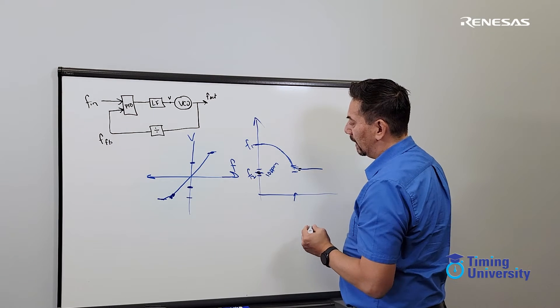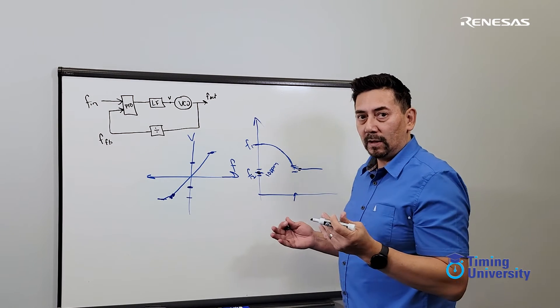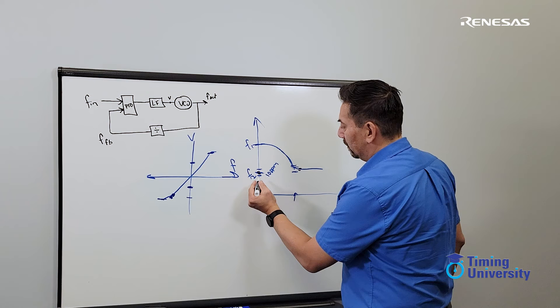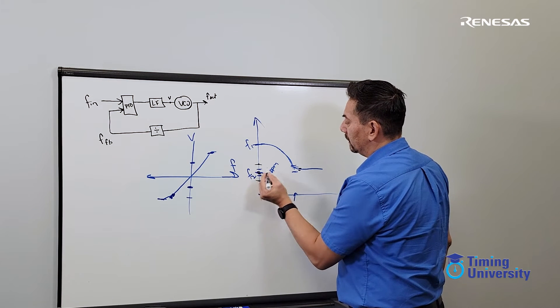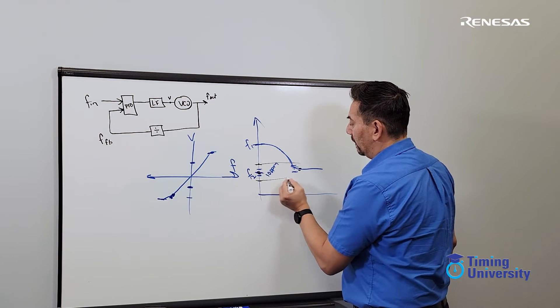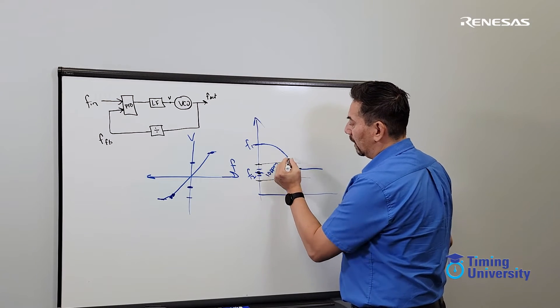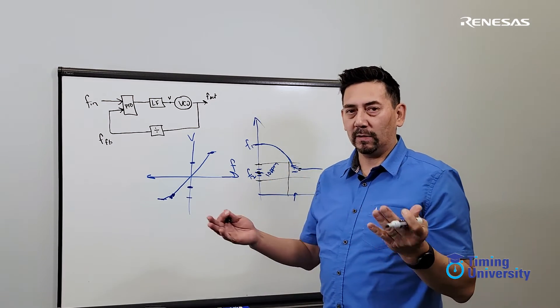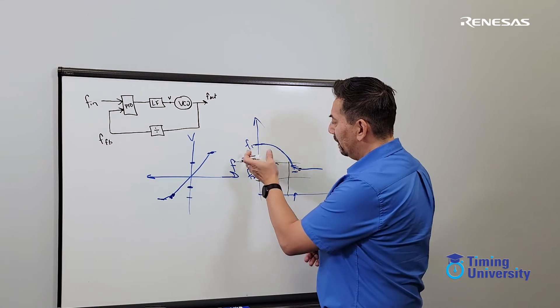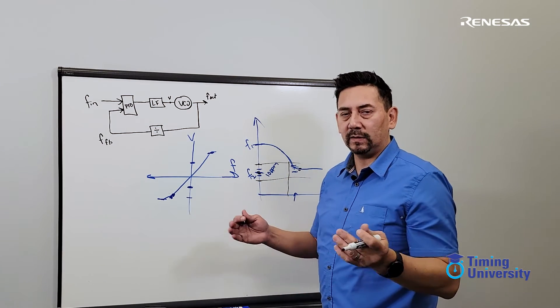If the frequency criteria is very loose, then this window opens up and now that PLL would say lock faster. So it's not that the frequency settles faster, it's just the criteria has changed.